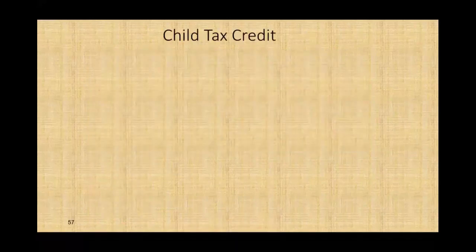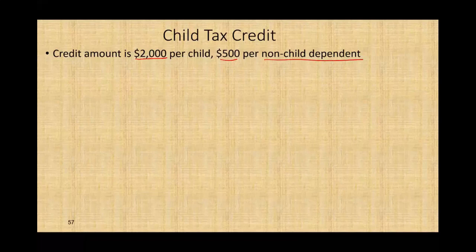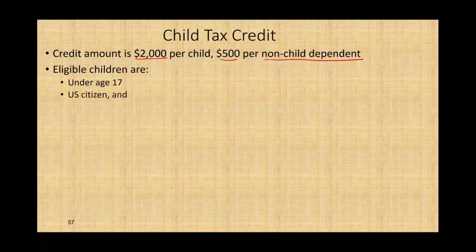Now, let's start with the child tax credit. Simply put, if you have a child, you'll get a tax credit — it's a very family-friendly tax credit. The credit is $2,000 per child and $500 if you have a non-child dependent. What is considered a child? They have to be under the age of 17, a U.S. citizen, and claimed as your dependent.